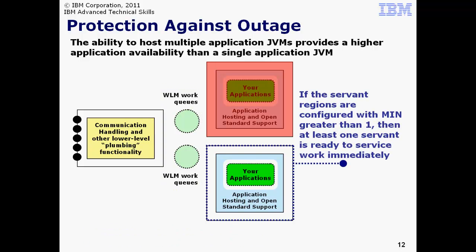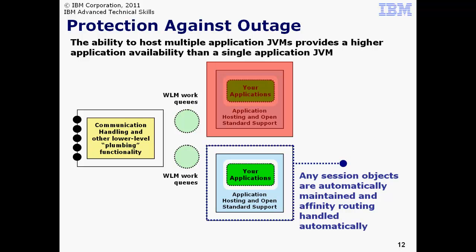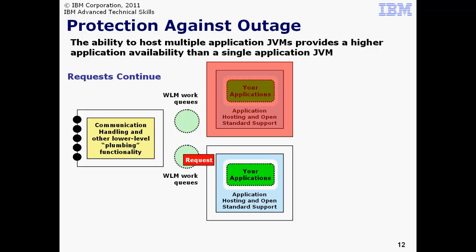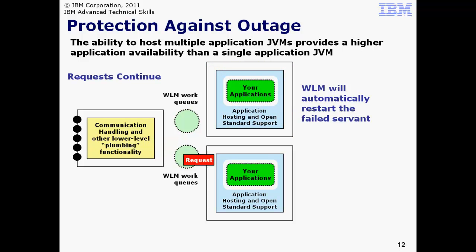If you've configured the minimum number of Servants to be more than one, the additional Servants will be up and active and ready to take work. People often ask what happens to HTTP session objects in this scenario. The answer is they're automatically handled. It does not require you to configure session replication domains. WAS z/OS maintains session objects in something called a z/OS data space that's accessible to all the Servants defined behind a controller. The session objects are not replicated; they're simply there to all the Servants if needed. The requests continue to flow into the controller region but are now routed to the second Servant. WLM will automatically restart the failing Servant region. In time, it comes back active. By default, work continues to the second Servant upon restart of the first. There are ways to accomplish a more round-robin behavior, but by default the design philosophy is to allow work to flow to as few Servants as ZWM deems necessary. Servant regions left up will be idle. They hold storage, but an idle Servant uses almost no CPU at all.